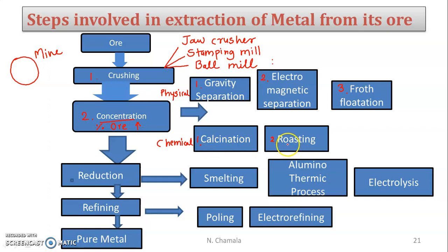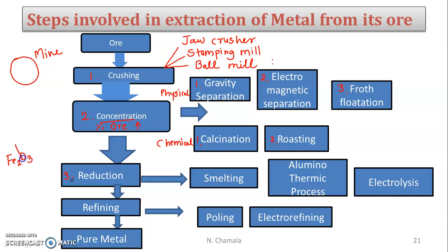After concentration, the next step is reduction. For example, take hematite ore with formula Fe₂O₃. After concentration, the gangue and matrix are removed, leaving hematite. Now I have to reduce this ore — I am interested in Fe, not the oxygen. I need to remove the oxygen, so I reduce the hematite.